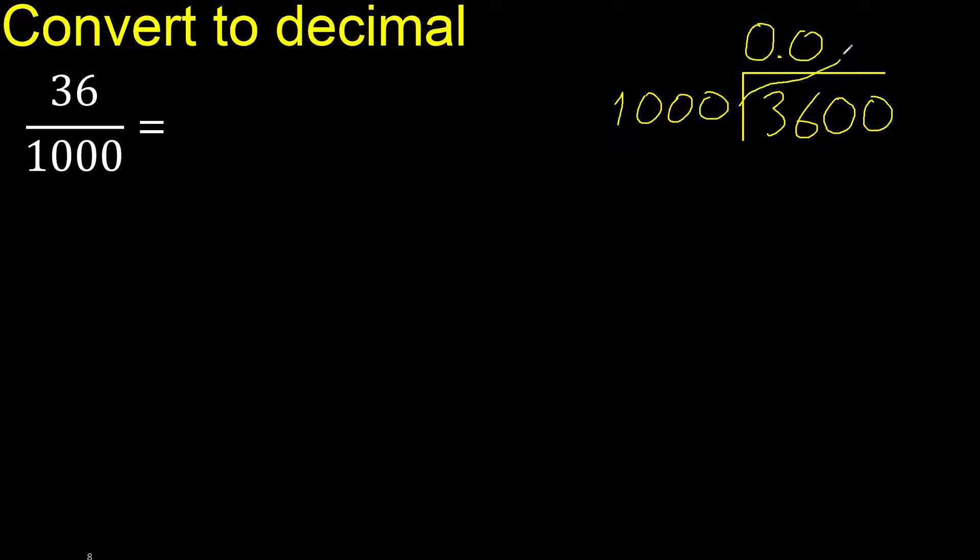1000 multiplied by which number is nearest to 3600 but not greater? Multiplied by 4 is 4000, is greater. Multiplied by 3 is 3000, is not greater, ok.